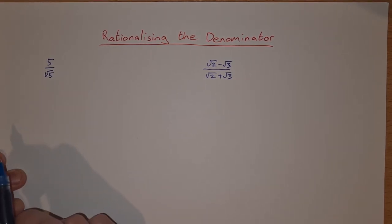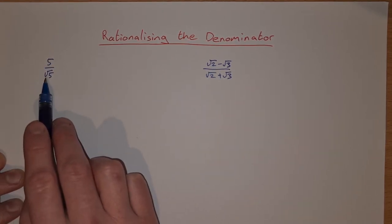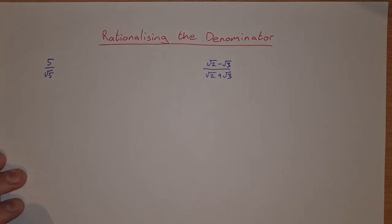When we're dealing with fractions with surds, so it's some sort of square root in the fraction, we don't want to have a square root on the bottom. We always want to have a rational number or a whole number on the bottom of a fraction.